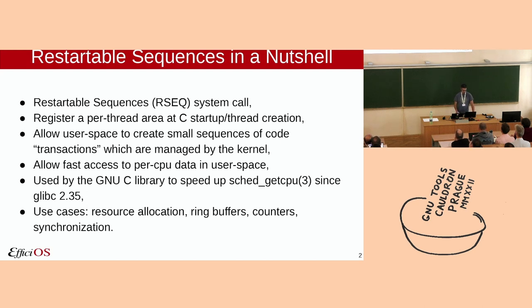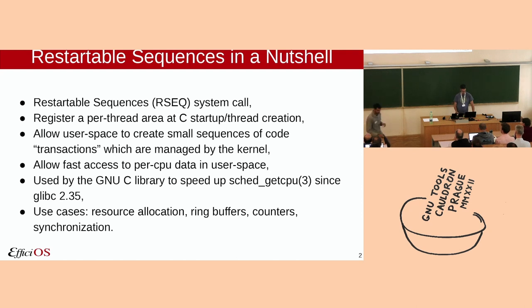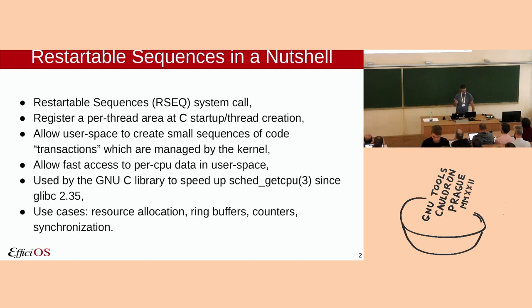It's currently used since the GNU C library 2.35, which integrated support for Restartable Sequences. It's used in the implementation of getCPU, especially to speed up architectures like ARC64, which do not provide a VDSO for getting the current CPU number. The kernel always keeps up-to-date the current CPU number in this per-thread area, so we just load it — that's very, very fast.